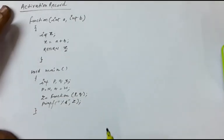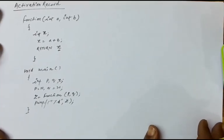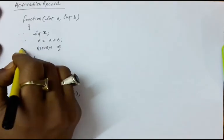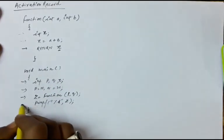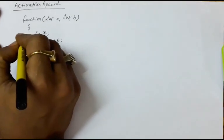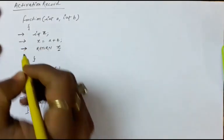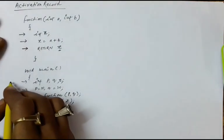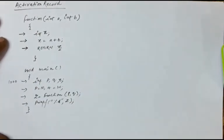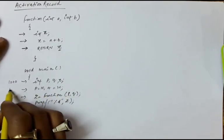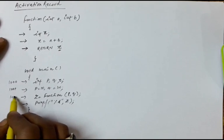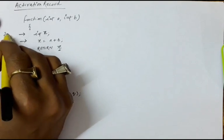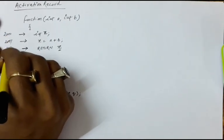What are the contents of the activation record, and how does it help us? Suppose this is a program with instructions that are stored in the RAM. The address at which the first instruction goes is, let's say, 1000; the next at 1001, this at 1002, and this at 1003. Similarly, the function's instructions go at locations 2000, 2001, and 2002.